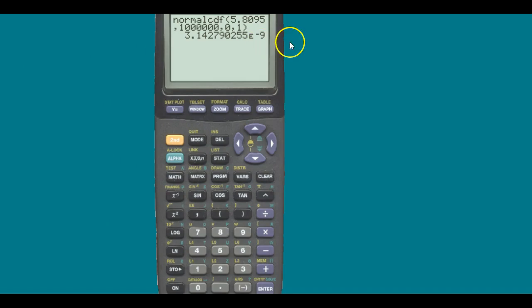If you're rounding to four decimals, it's zero. The solution is zero. Now let's show you a different way of going about this, using the given information in your problem.